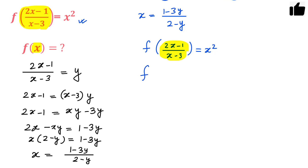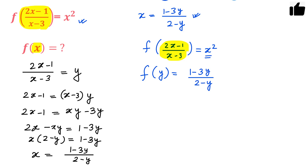We write f(y) equals x squared. Since we need to express x in terms of y, and we already have x equals (1 minus 3y)/(2 minus y), we substitute to get f(y) equals [(1 minus 3y) divided by (2 minus y)] whole squared.